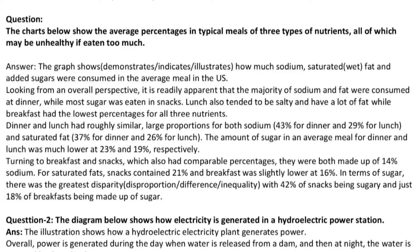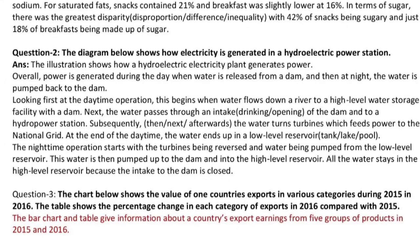The diagram below shows how electricity is generated in a hydroelectric power station. The illustration shows how a hydroelectric electricity plant generates power. Overall, power is generated during the day when water is released from a dam, and then at night the water is pumped back to the dam.